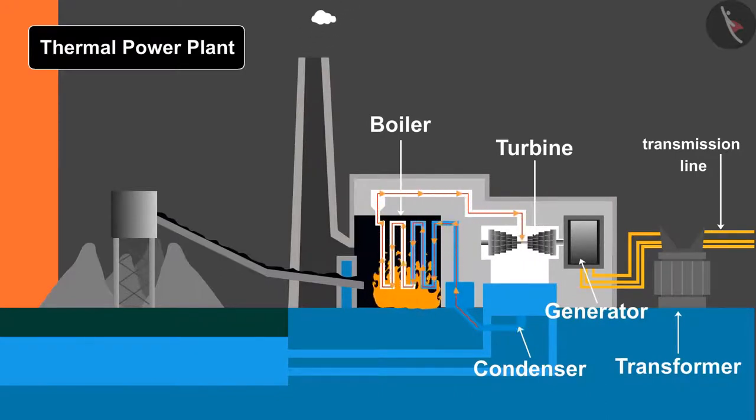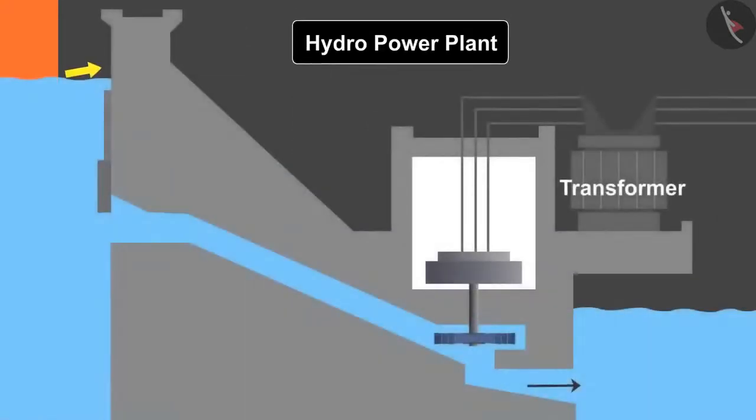This is the cheapest and easiest way to generate electricity because water and coal are available in abundance, but it is one of the major causes of air pollution too. Next conventional source of energy is hydropower plant.